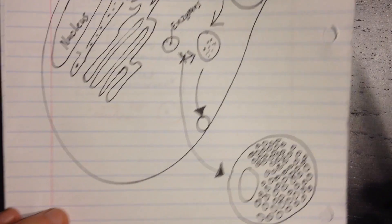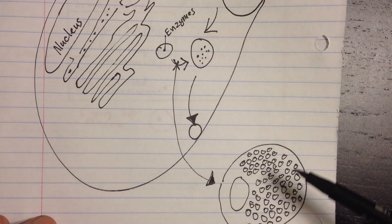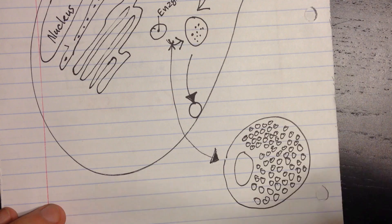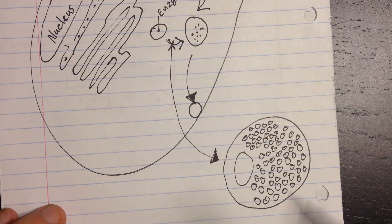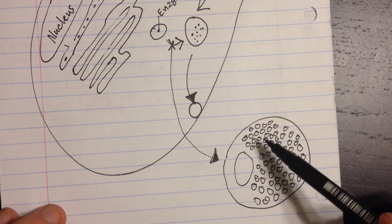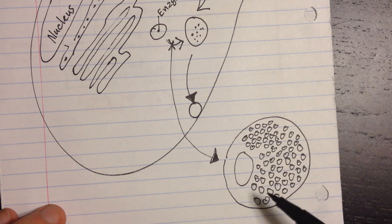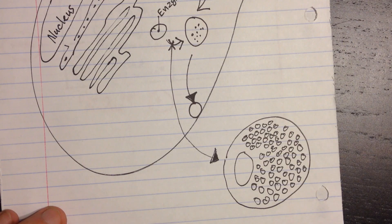The cell begins to get huge. I drew it smaller here, but imagine a cell ten times the size. It begins to accumulate vacuoles of whatever it's unable to digest.